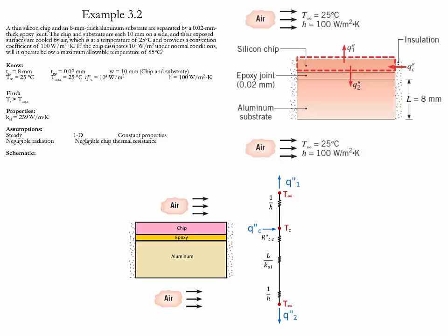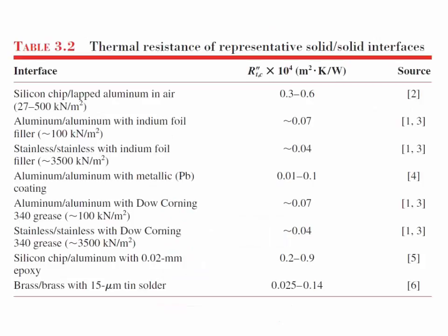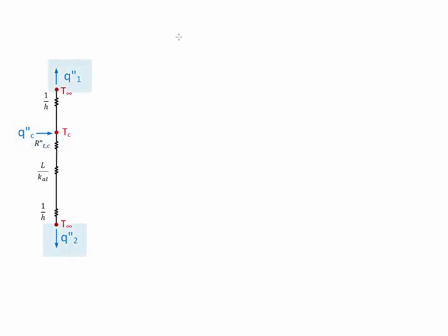The heat fluxes in the problem are given as Q1, which is convection leaving the system; Q2, which is a combination of convection and conduction; and Qc, which is the flux being generated by the chip. To find the thermal resistance of the epoxy between the silicon chip and the aluminum substrate, we go to Table 3.2 and choose the maximum value to provide the highest resistance. We start the analysis with a balance of fluxes.